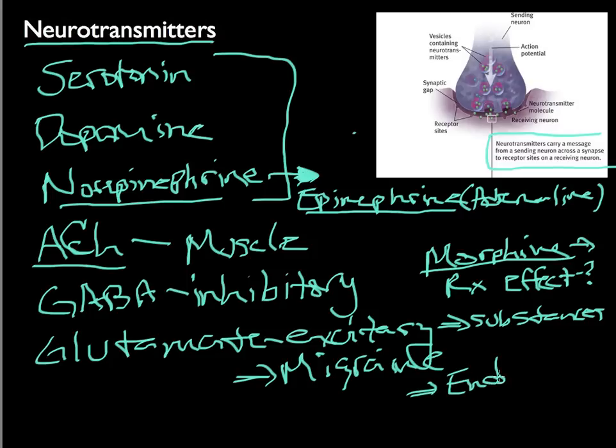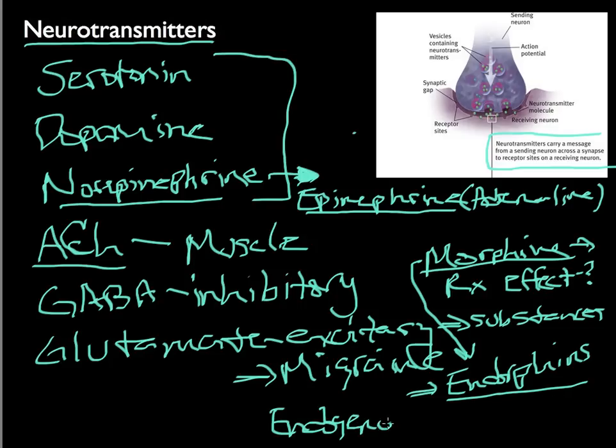Essentially, morphine mimics the effect of a naturally occurring painkiller called endorphins. It's the combination of two words, endogenous, which is internally occurring, and morphine. That's how we came by the word endorphins, usually released when we're under a great deal of stress. Stress in the sense of the runner's high is usually what's referred to as an endorphin high. And that's part of the whole process when we're talking about neurotransmitters.